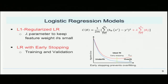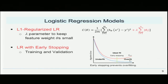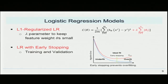Both logistic regression models attempted to fit a logistic curve to the features dataset by minimizing a loss function. In the L1 regularized model, an extra lambda parameter was incorporated to keep feature weights low and prevent overfitting. The early stopping model further split the training data into a training and validation set. The model would train on the training set and validate its accuracy on the validation set, stopping when the error in the validation set began to increase, signaling overfitting on the training dataset.